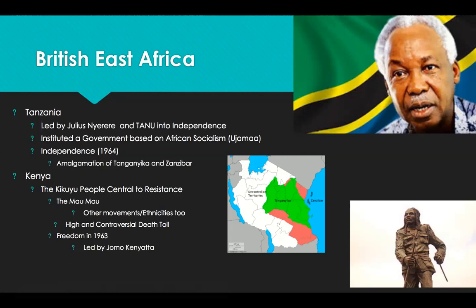Modeled in large part after Kwame Nkrumah's CPP, the party received massive rural support. Remember, Kwame Nkrumah's Ghana had become independent in 1957, and the CPP movement had been around since the 1940s. So some of the leaders who were coming up modeled their political parties after the CPP. Nyerere had been educated at the University of Makerere in Uganda — the foremost university in East Africa — before going to graduate school at the University of Edinburgh in Scotland.